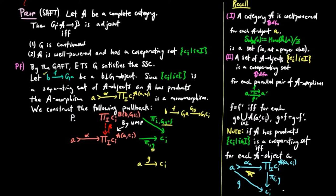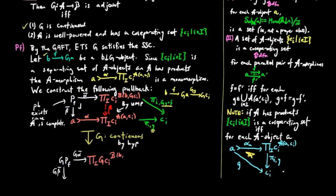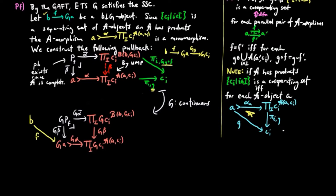We take the pullback of alpha and beta to obtain the pullback square, then apply the functor G to it. Since G is continuous, the resulting commuting square is a pullback with products commuting with G. We now show that F has a factorization through G beta-bar using the universal mapping property of the pullback, defining a morphism from B to the top product of C_I powers such that post-composing with the projection on H gives back H.